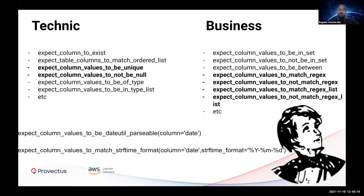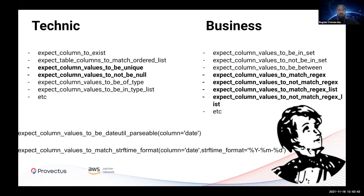For example, take a date column — almost all data sources have one. We use technical tests for this, such as 'expect column values to be of type date,' because we always need the date type on that column. For format, we use 'expect column values to match datetime format,' and so on. In the business suite, technique is about type checks and simple technical restrictions, while business is about formats and logical restrictions. On screen you can see how we divide them into technical and business examples.